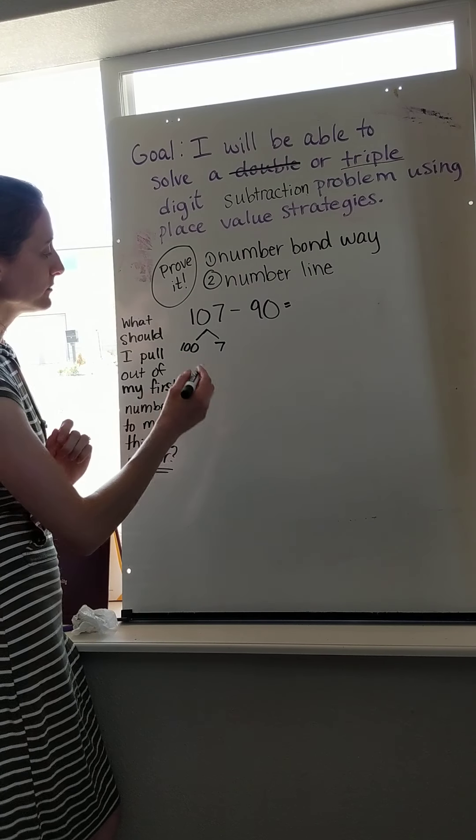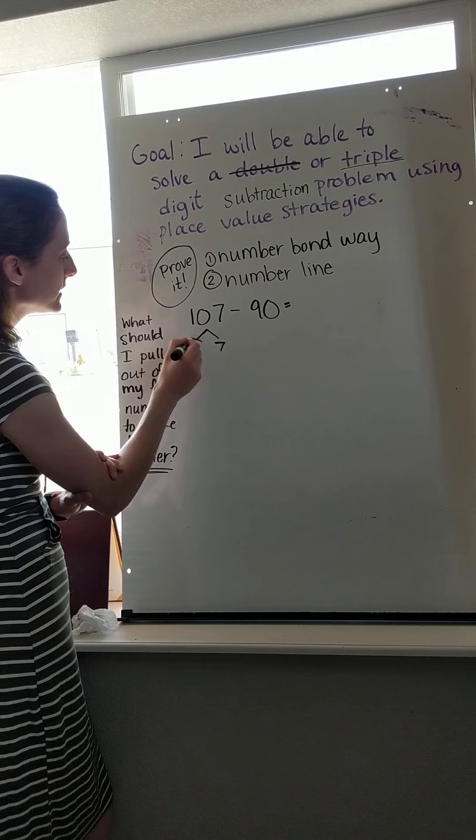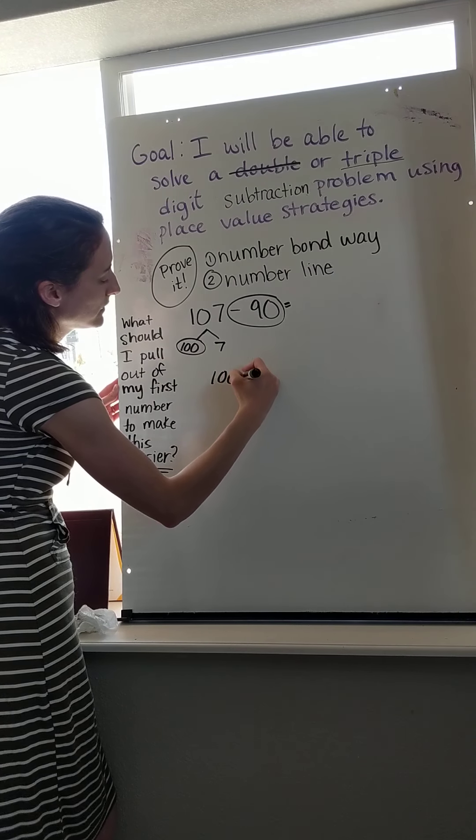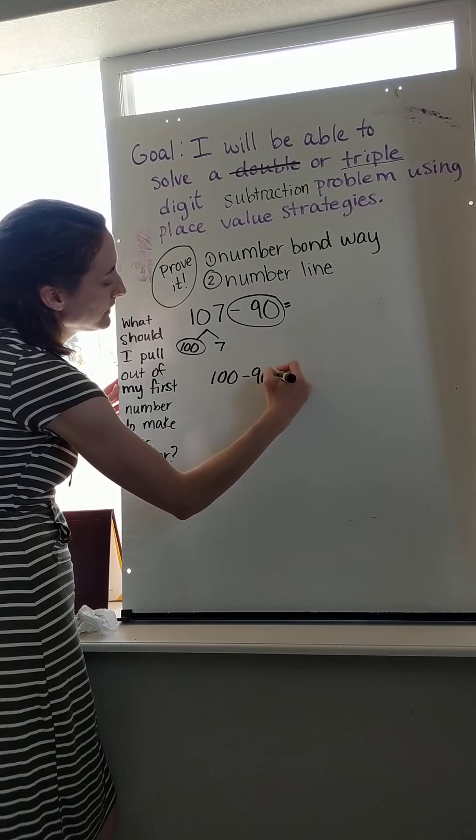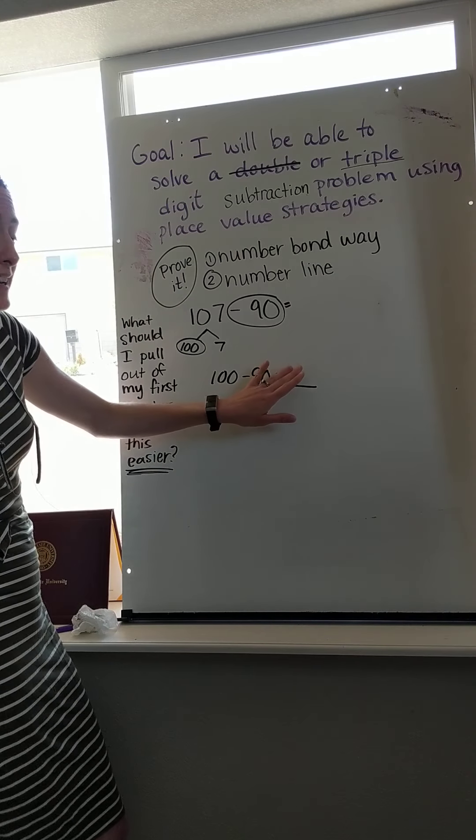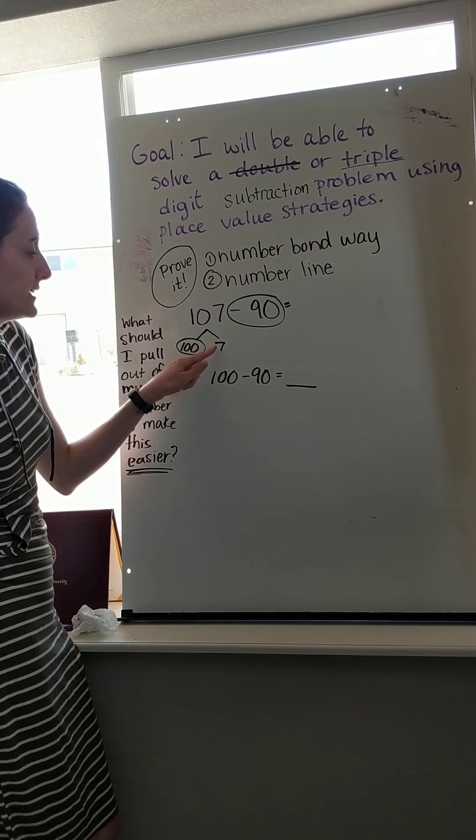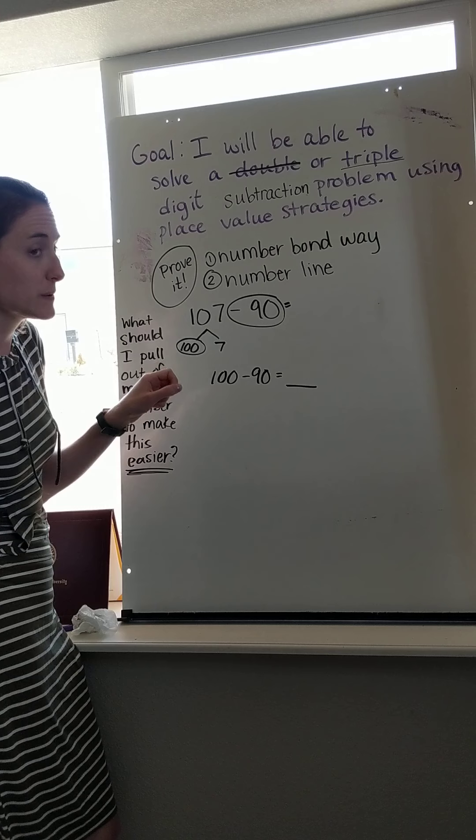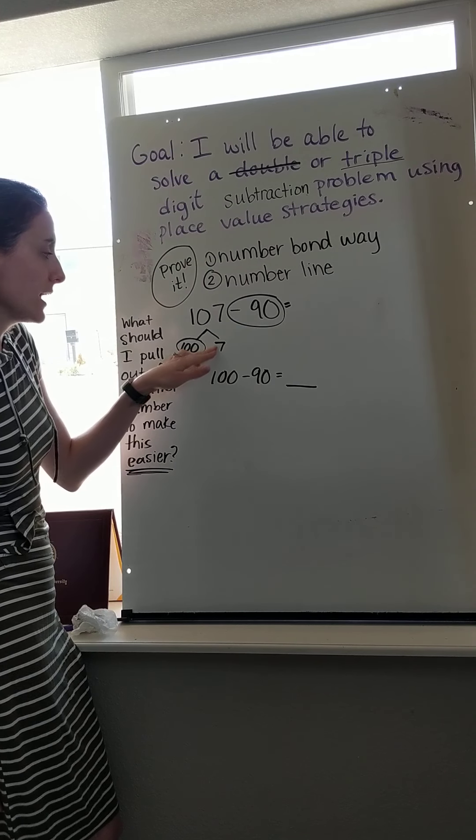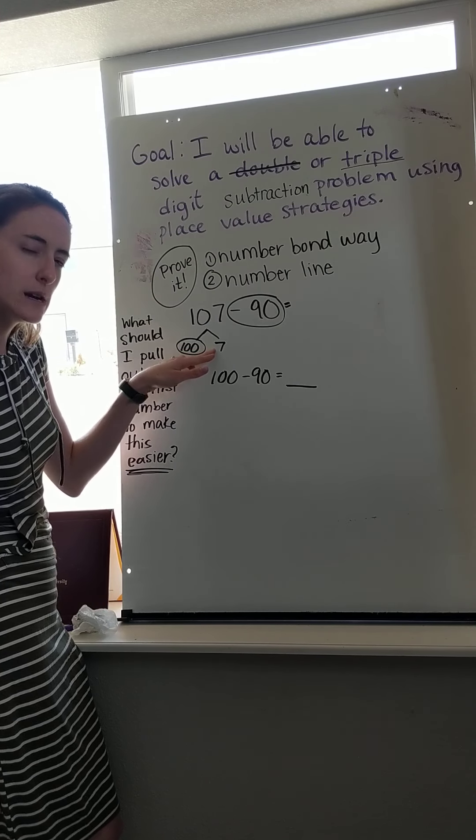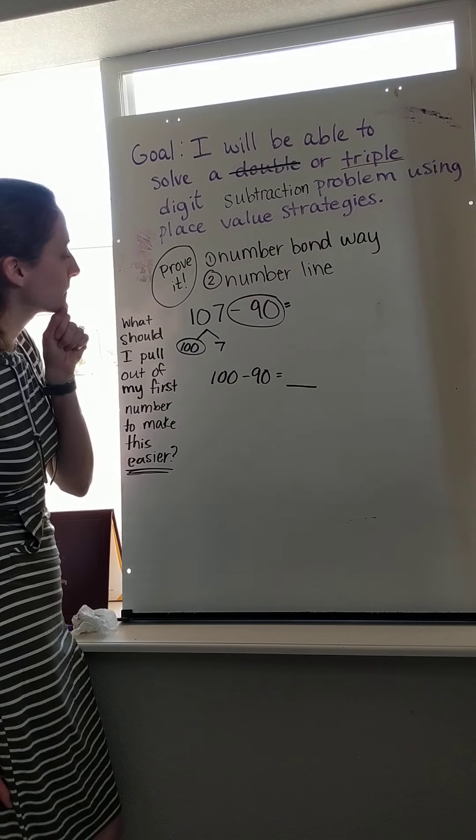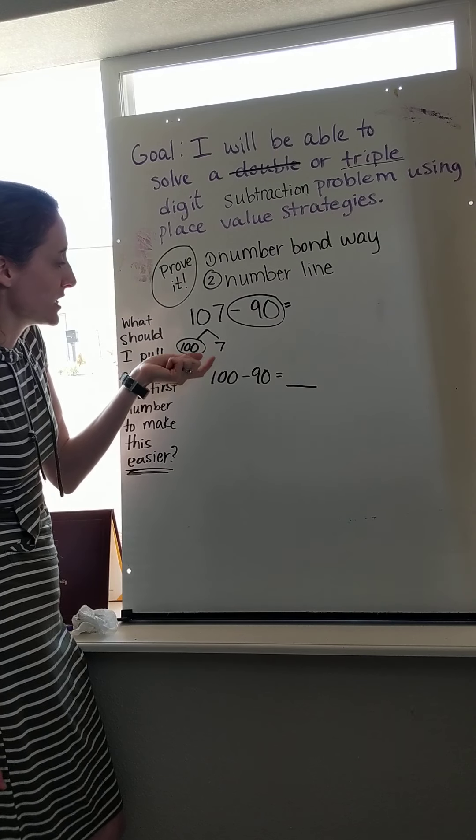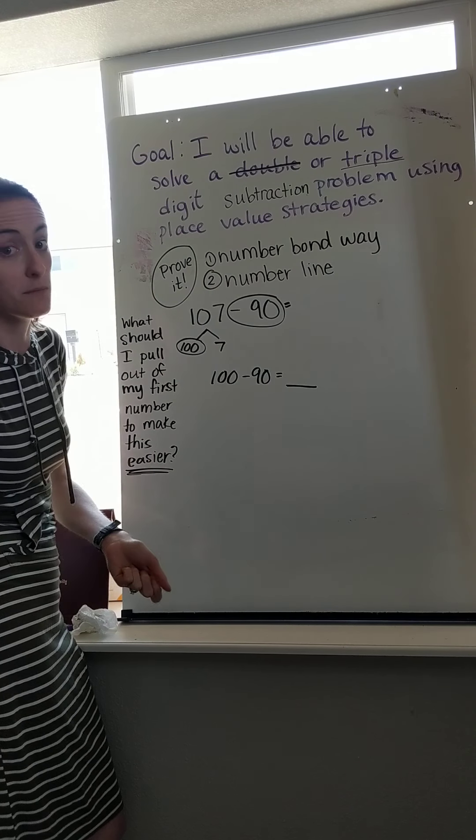So now, my new equation that I can create is 100 minus 90. So we go 100 minus 90 equals n. But as soon as I get that answer, I know I need to add back the 7, because the 7 wasn't supposed to be taken away. I was just kind of leaving it there until I was ready to think about it. So I'm saying 100 minus 90, I could do that much, and then I just add back the 7 to find my answer.